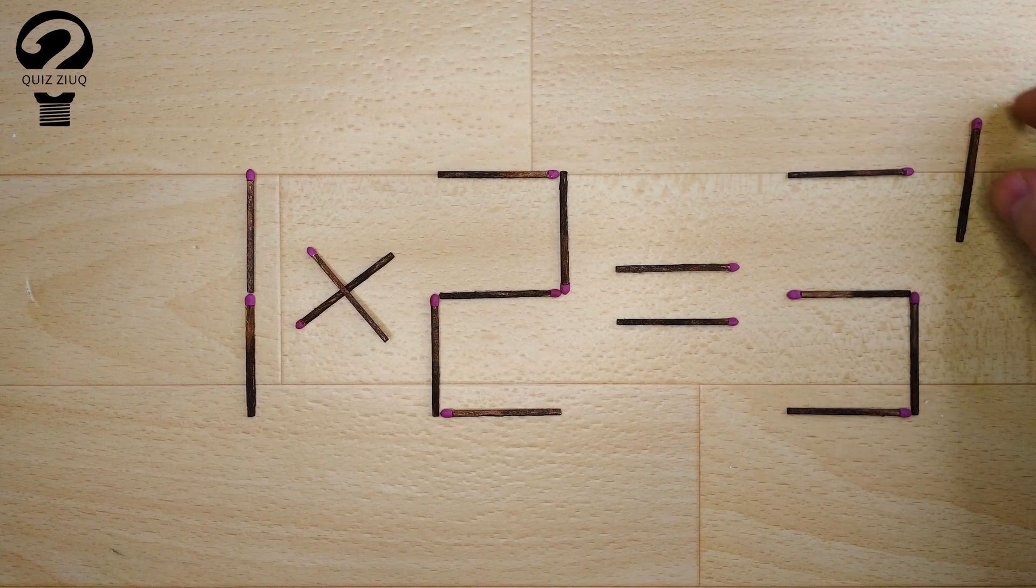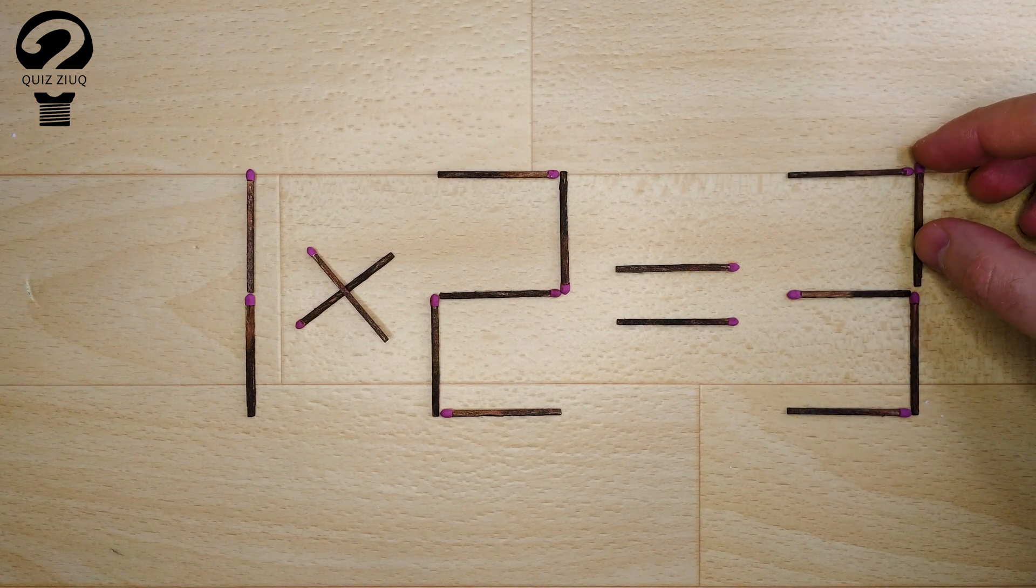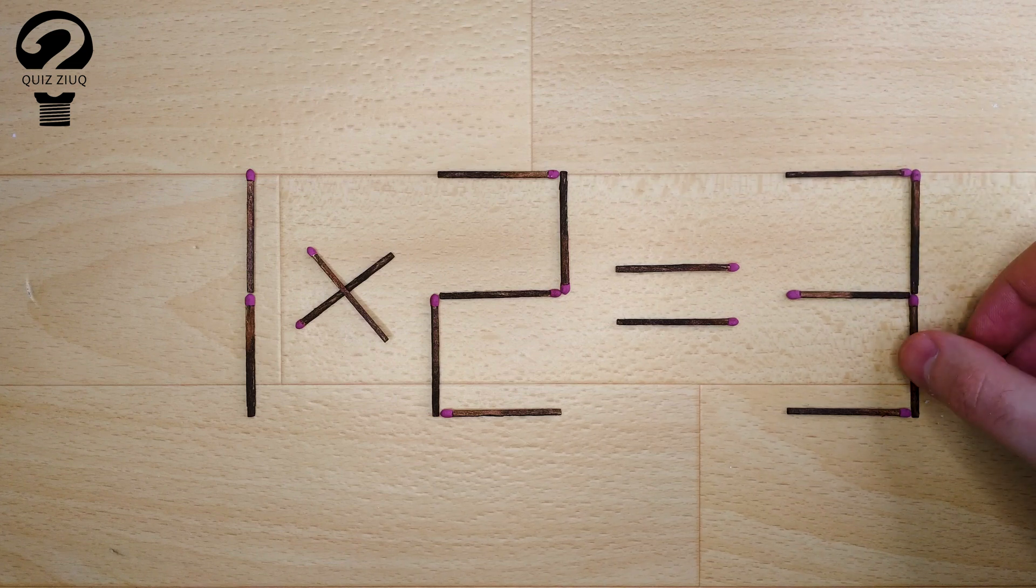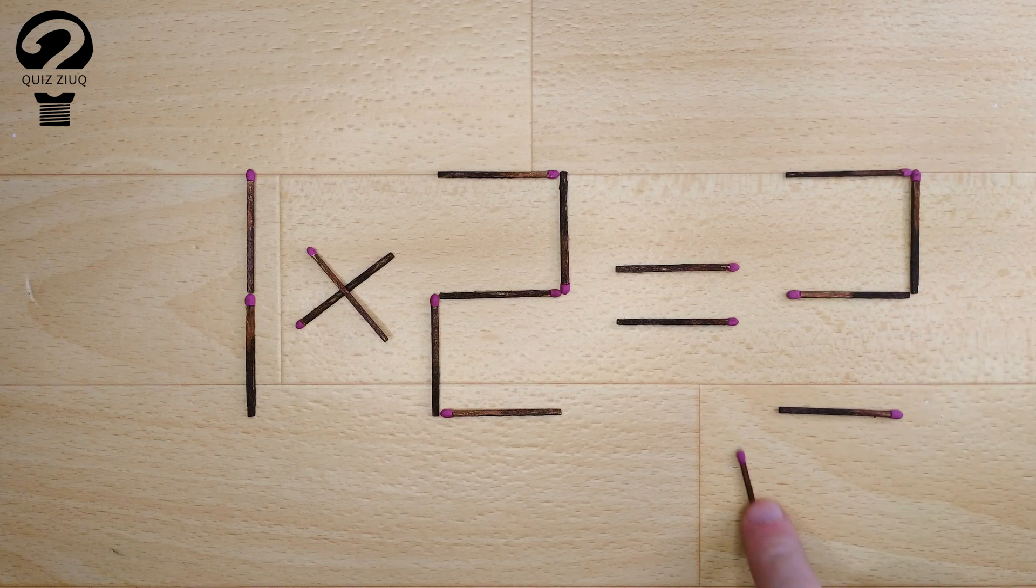And now, when we check, 1 times 2 equals 2. 2 equals 2. Our equation is correct. The puzzle is solved.